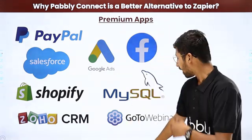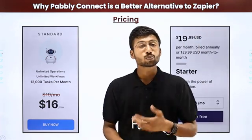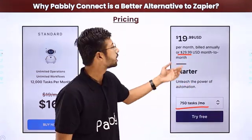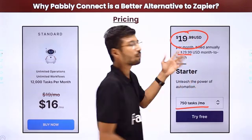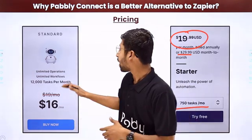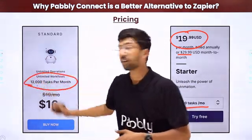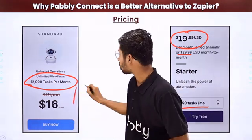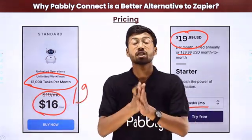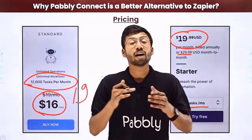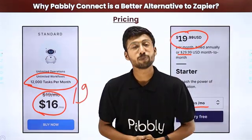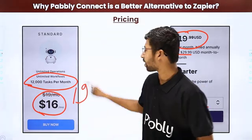Finally, pricing: Zapier offers 750 tasks/month at $30/month, or $20/month billed annually. Pabbly Connect offers 12,000 tasks/month at $19/month, or $16/month billed annually. That is a huge difference both in price and in task count, making Pabbly Connect a significantly better value automation platform than Zapier.